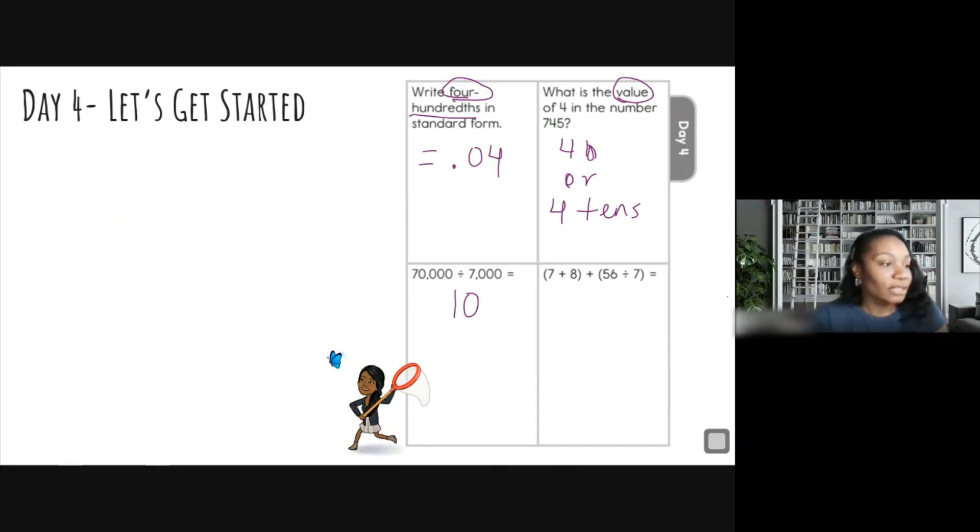So these parentheses, they're basically telling me what to do first. So I see 7 plus 8, so let's write it over here: 7 plus 8 in parentheses. And then I'm going to put a plus sign there. And then I have another parentheses, 56 divided by 7. Okay, so I have my problem written out.